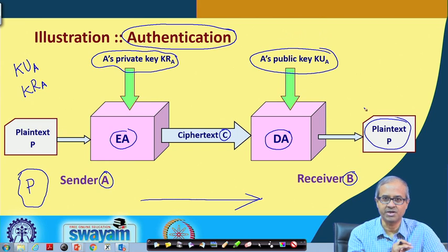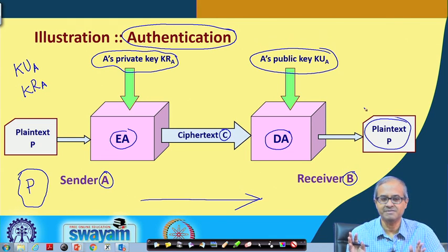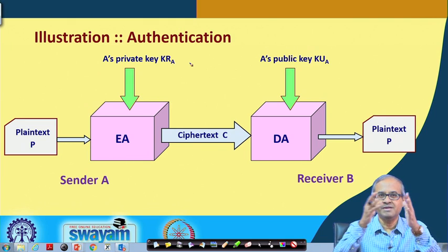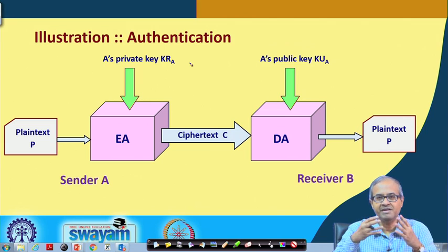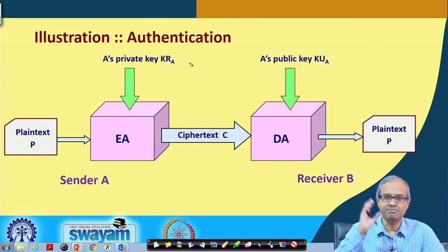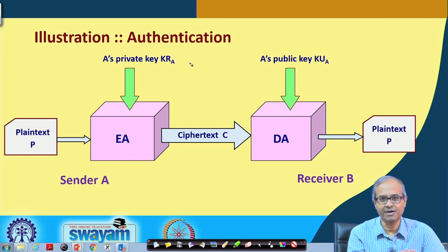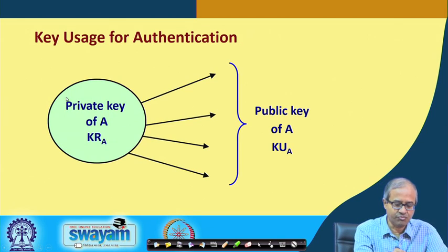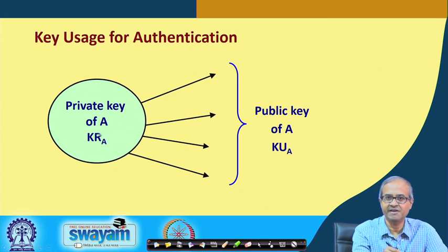This is how authentication works in this case. Just by changing the loop - here I am not talking about the secrecy of messages. A is encrypting using its own private key. The entire world knows my public key, so anyone can decrypt it. Let them decrypt - I do not care. I am only concerned with receiver B. B should be able to decrypt it and identify that I am actually A. We encrypt using the private key of the sender, and anybody can verify the authentication of A by using the public key of A and decrypting it.